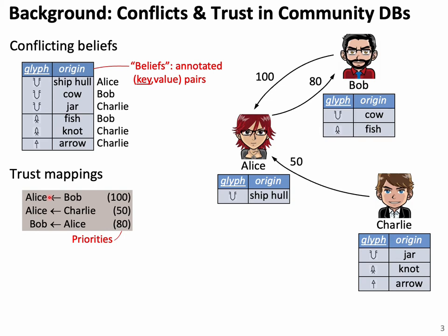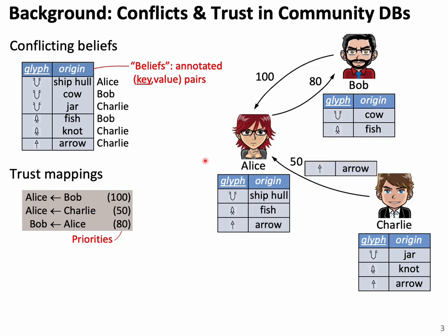In addition to their own databases, Alice, Bob, and Charlie may have certain trust mappings to other users of the system. The basic idea is that if Alice doesn't know the value of a certain key, she may trust Bob and Charlie. And in case they disagree, she trusts Bob with higher priority — she trusts Bob more than Charlie. Based on these trust mappings, she can import beliefs from other users.